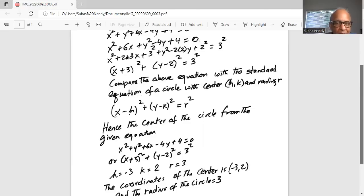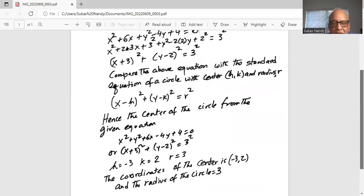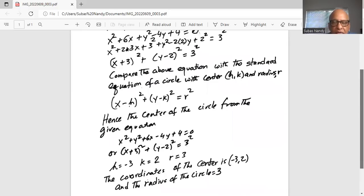Why is it minus 3? Because the standard form is x minus h square, we have x plus 3. So if we make it x minus and in parentheses minus 3, then h will be minus 3 and minus and minus will make it plus. So h is minus 3, k is 2 and r is 3.